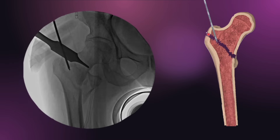Conventionally, in intramedullary nailing for proximal femur fractures, we use the trochanteric tip as the entry point. Here also, we have achieved the reduction to some extent with a well-aligned medial cortex, and now we are attempting an entry point. We are inserting the guide wire through the tip of the greater trochanter and directing it towards the medullary canal. By this time, the technique appears satisfactory and is in line with the described technique for proximal femur nails, or cephalomedullary nails.